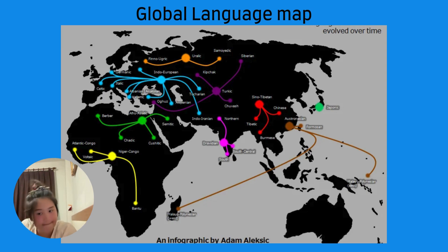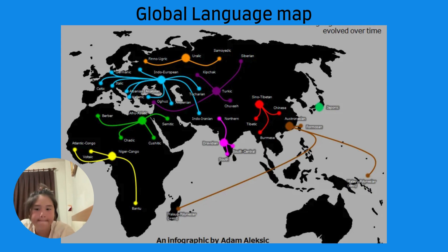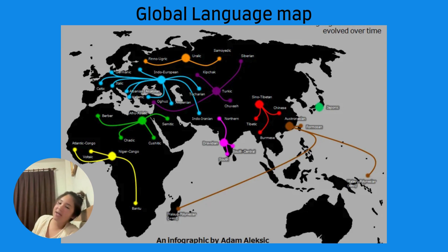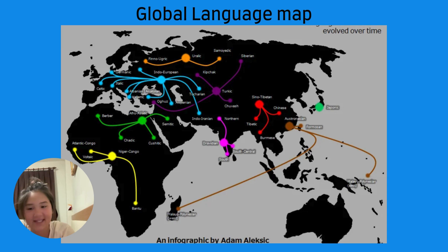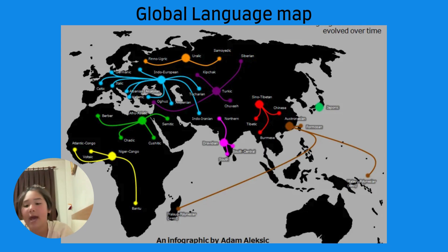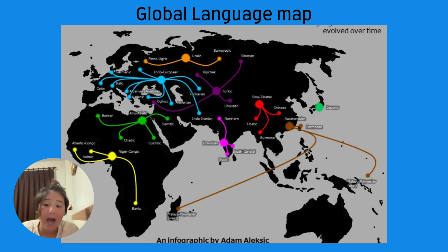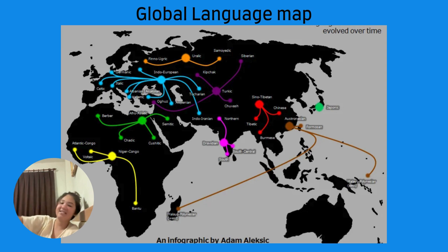Welcome to the chaos. Fast forward a few thousand years and languages start to evolve and break off into different families. Imagine a giant dysfunctional Thanksgiving dinner where everyone speaks a slightly different dialect and no one can agree on how to pronounce 'pecan pie.' That's basically how we ended up with language families. Indo-European — the big daddy of them all — this family gave birth to English, German, Spanish, French, Portuguese, Russian, and more.